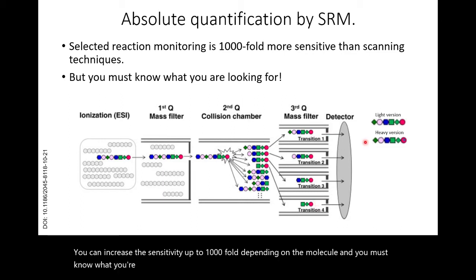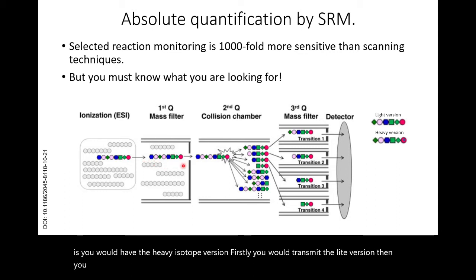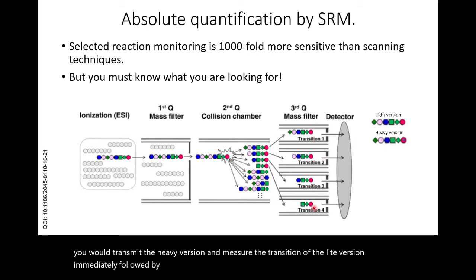When you do this with heavy isotopes, you would first transmit the light version, then transmit the heavy version and measure the transition of the light version immediately followed by the transition of the heavy version. You would do this for all of your different transitions.